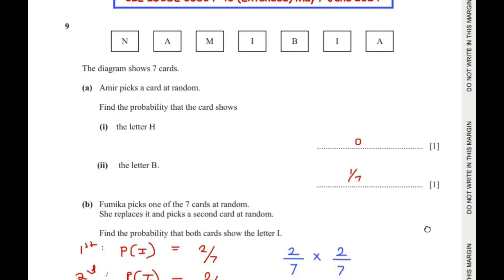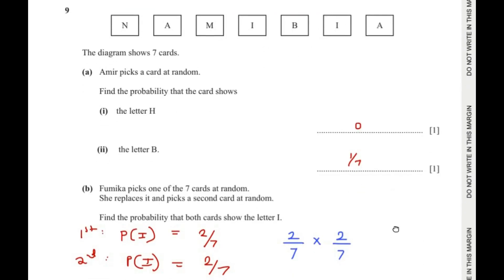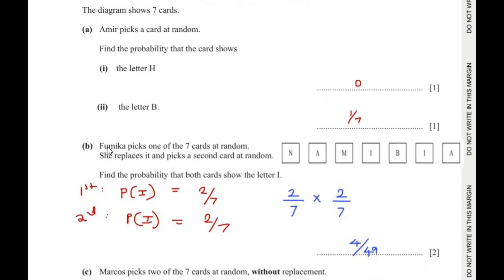Now let us move on to part B. Fumika picks one of the 7 cards at random, replaces it, and picks a second card at random. We have to find the probability that both cards show the letter I.